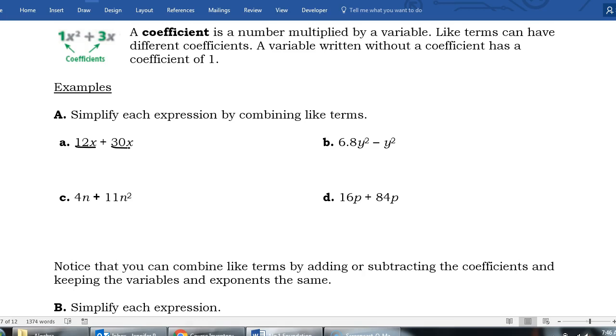So I would do 12 plus 30, which is 42. And then my variable stays x. It's saying I have 12 x's and I add 30 x's to them. That's 42 x's altogether.